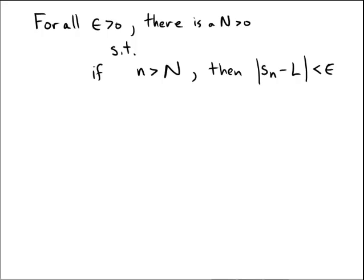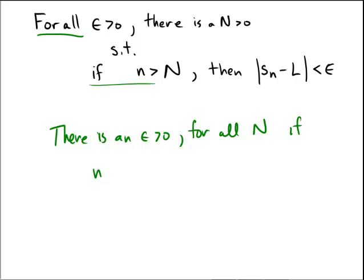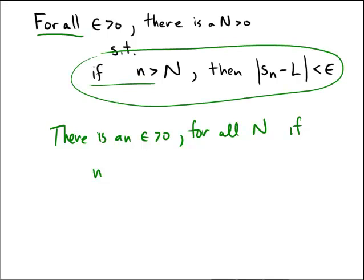So what would it mean for something to not converge, to diverge? Well, the negation of this statement, since it's universal, would be an existential statement. So we'd have to show that there is an epsilon greater than zero, such that for all n, that this statement right here would have to be false. So what would it mean for that statement to be false?